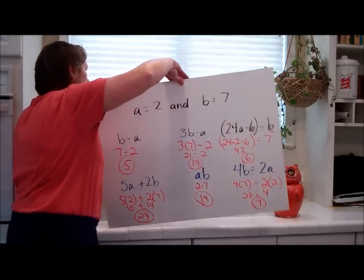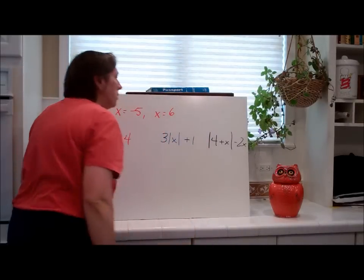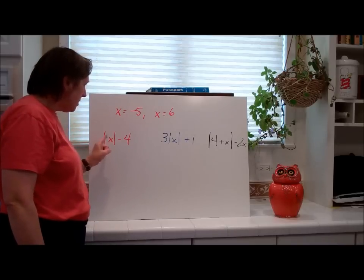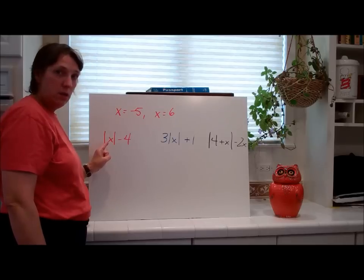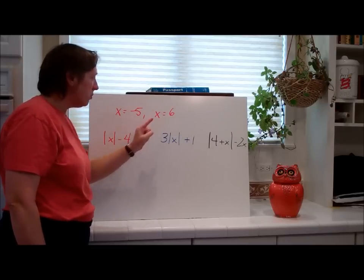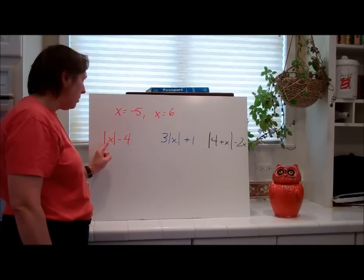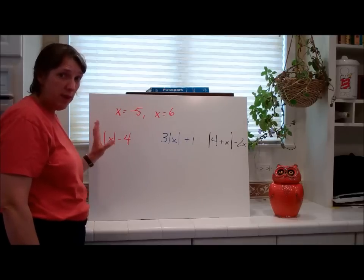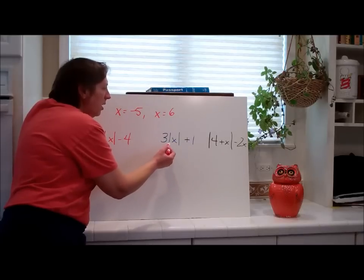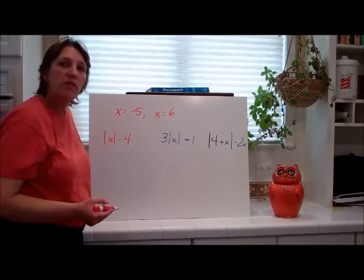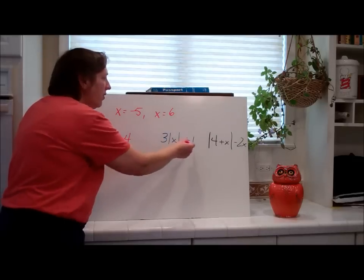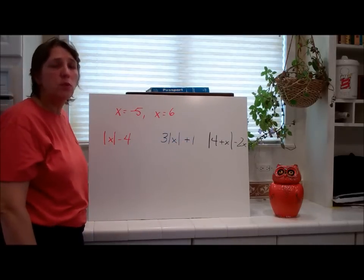The last ones involve absolute value. I want you to pause the video. Remember these say the absolute value of x. You have to do these problems twice because it tells you x is negative 5 and x is equal to 6. The absolute value of negative 5 — evaluate that first, then say minus 4. And this one: 3 times the absolute value of x. Simplify the absolute value of x first, then multiply by 3, then add 1. Pause the video, do the problems, and we'll do them together when you come back.